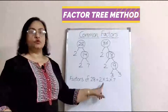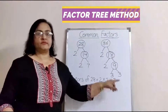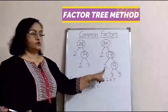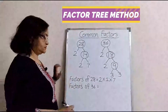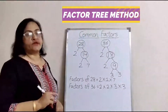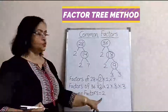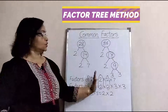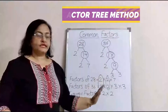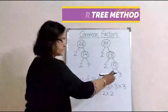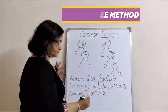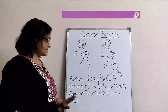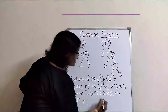Factors of 28 are 2 × 2 × 7. Factors of 36 are 2 × 2 × 3 × 3. Now let's see the common factors: 2 is common, and another 2 is also common. There are no other common factors. So 2 × 2 = 4, and the highest common factor is 4.